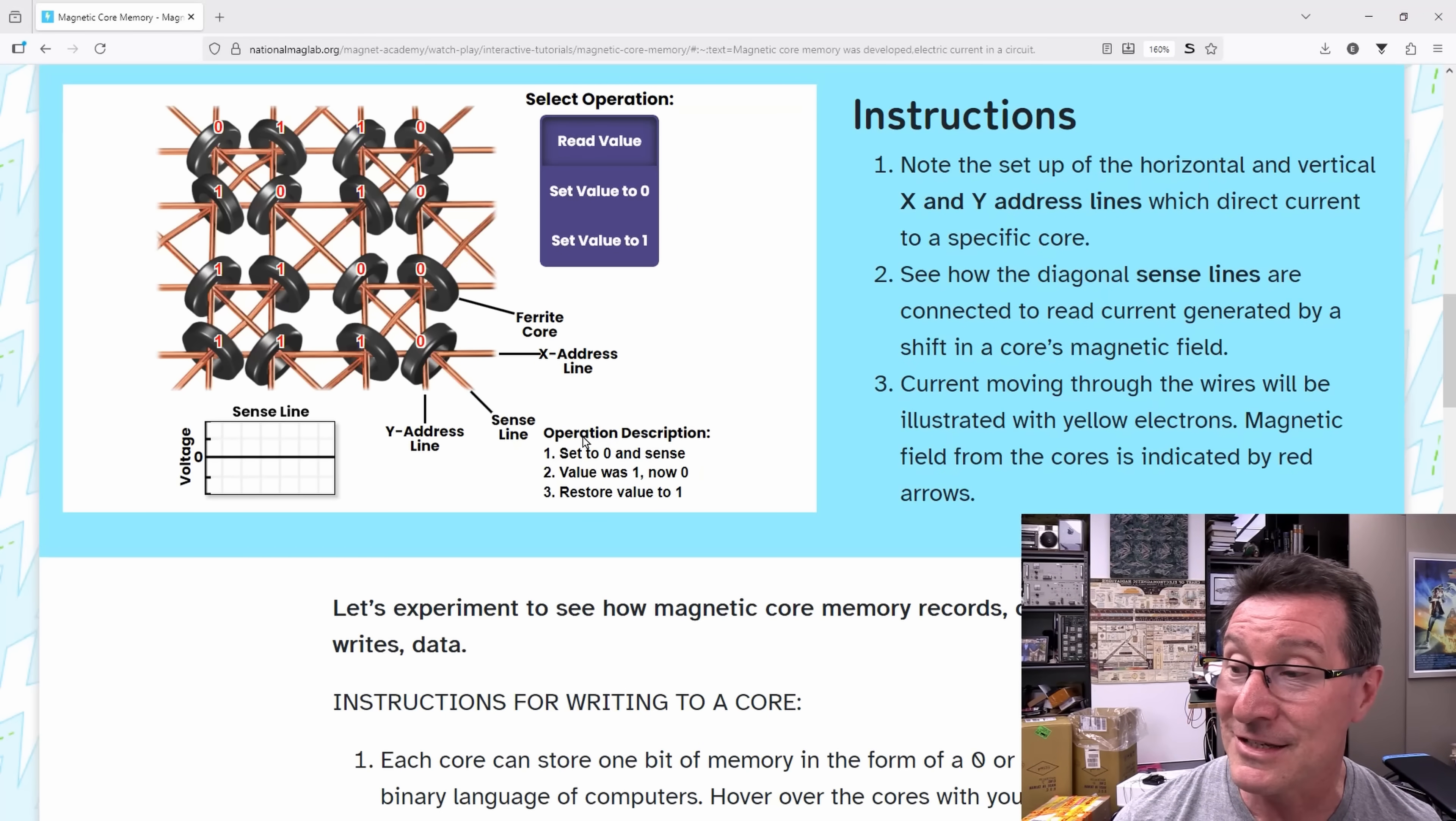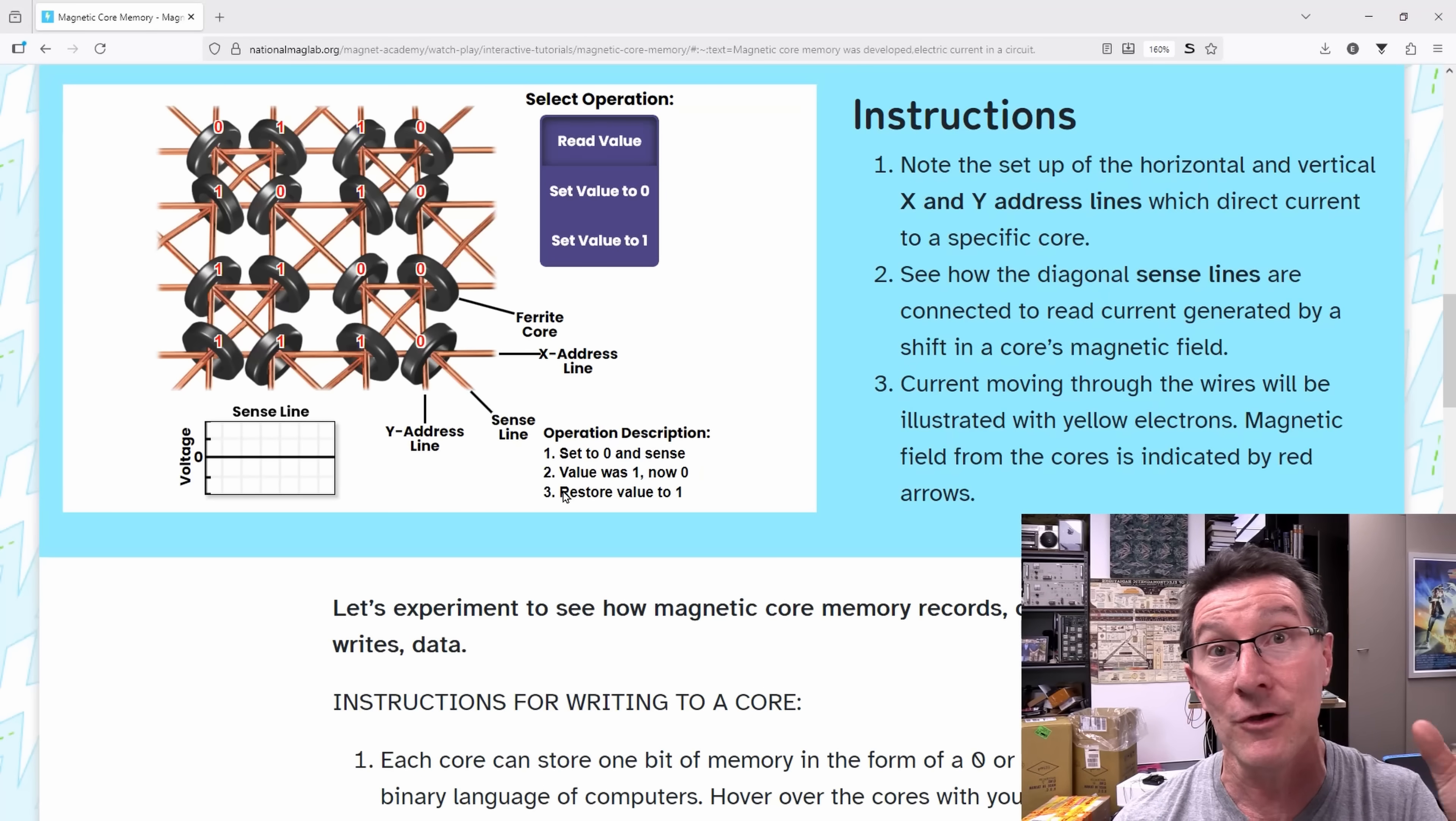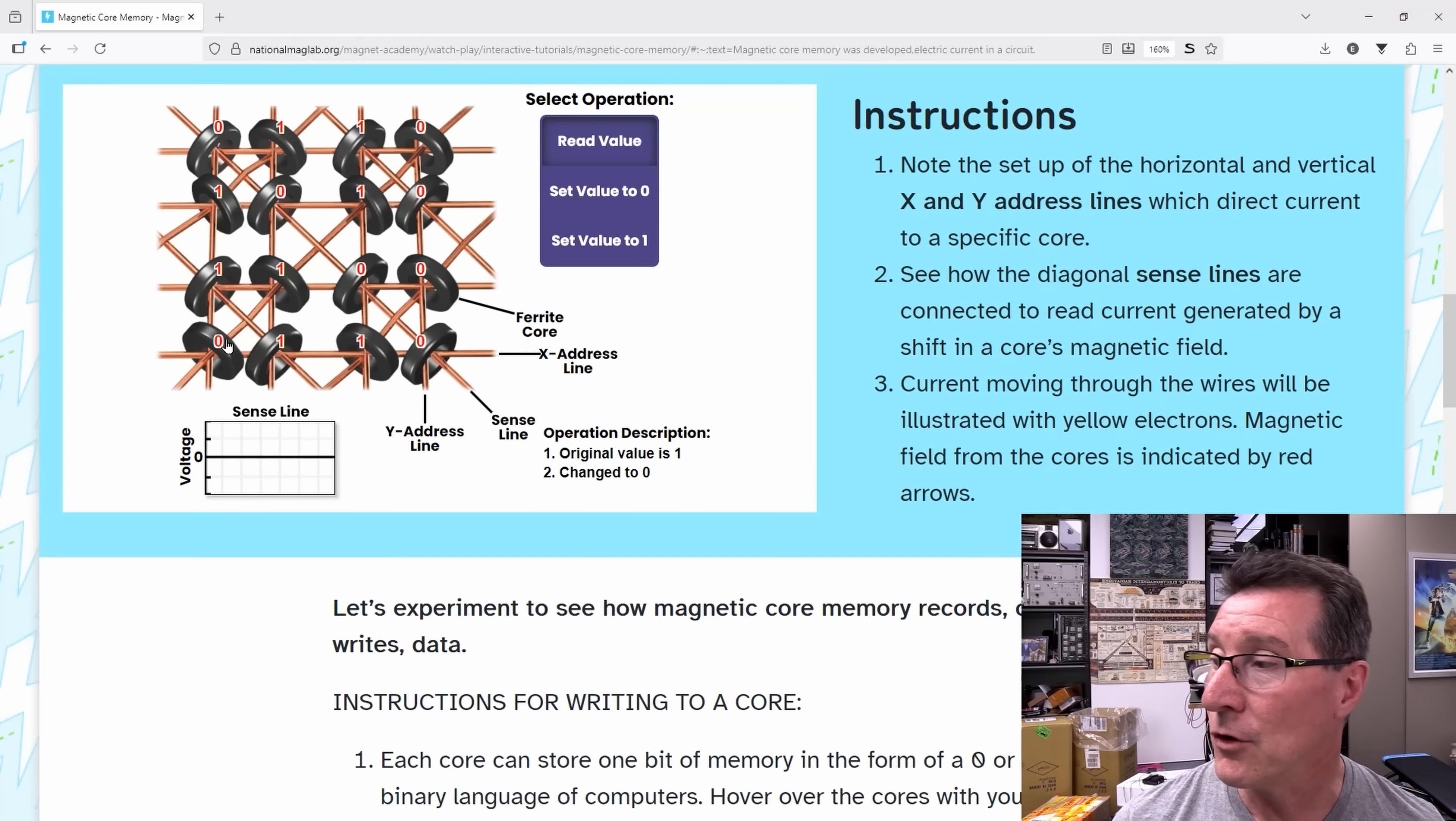You saw that it actually rewrote that bit back after reading. Basically, we're writing in a zero and reading the sense line at the same time. The value was 1, but it's now a zero. Then you had to restore... So you've read the value, you can process that, do whatever you want. But then you have to restore that value of 1 back.